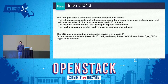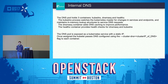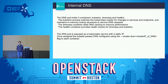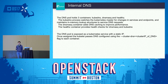The DNS pod holds three containers: Kubernetes DNS, dnsmasq, and a health container. The Kubernetes DNS process watches the Kubernetes master for changes in services and endpoints and maintains in-memory lookup structures to serve DNS requests. The dnsmasq container adds DNS caching to improve performance. The health container provides health checks for dnsmasq and Kubernetes DNS. The DNS pod is exposed as a Kubernetes service with a static IP, and when a new container is created, Kubernetes passes the DNS configuration as a flag to each container.